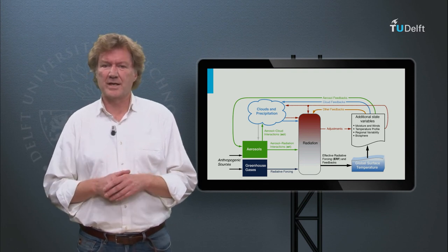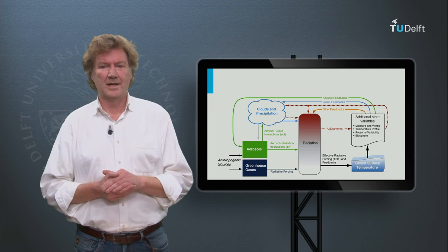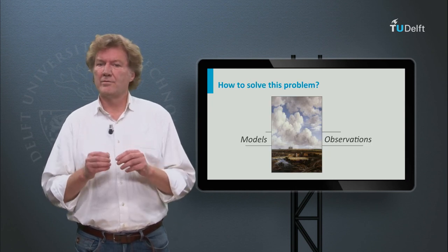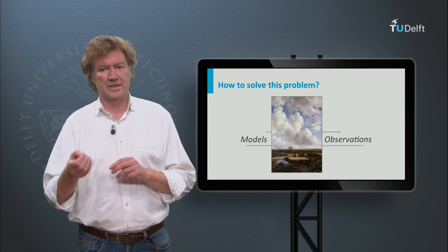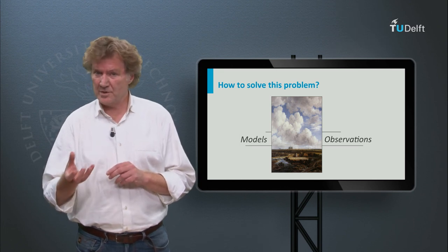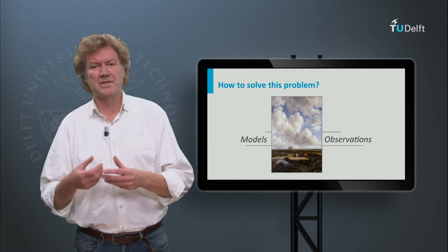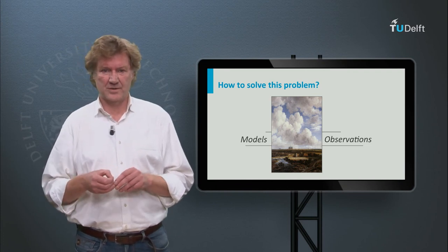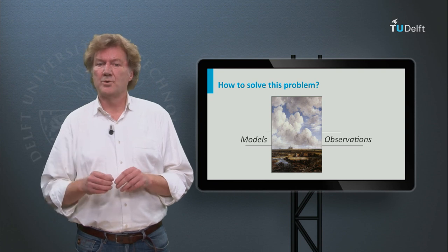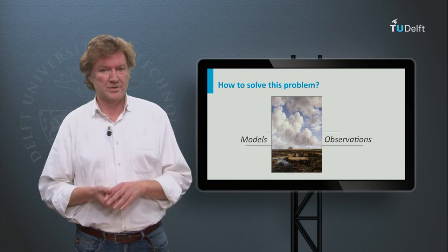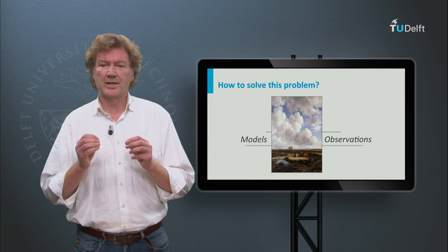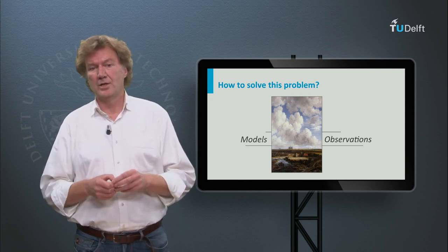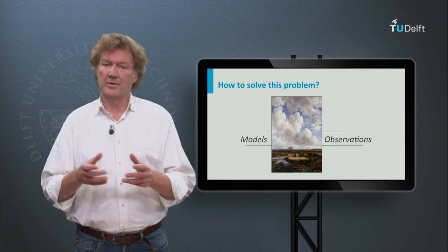These are quite some questions to ask and answer. The only way to address them is via a combination of modelling and observations. We need observations from space, ground, and aircraft to understand the current state of the Earth system and to study separate processes. Models are needed to put observations into the context of general understanding and to calculate what might happen in the future. And then again, we need observations to test the models.